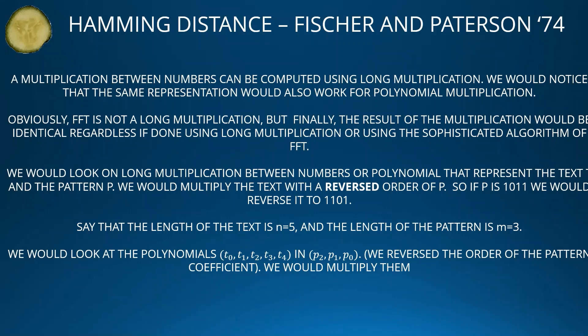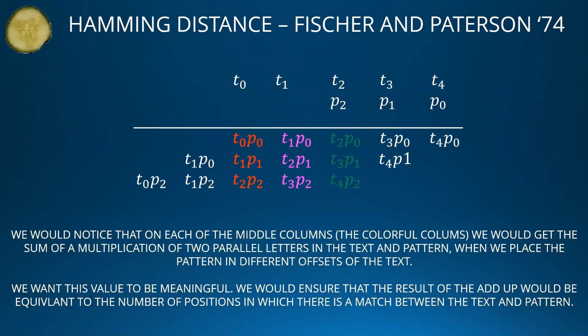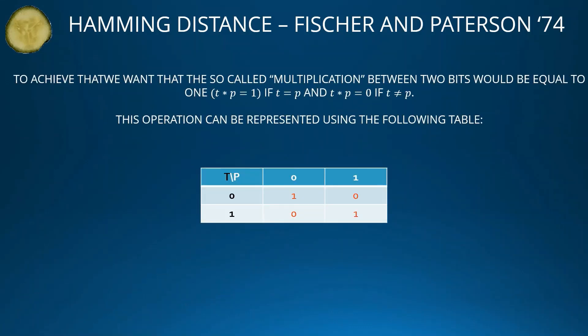As you can see, on each of the middle (colorful) columns we get the sum of products of corresponding letters in the text and pattern when the pattern is placed at a different offset in the text. We want this value to be meaningful: the sum should equal the number of positions where there is a match between the text and the pattern. To achieve that, we want the multiplication of two bits to equal 1 if T = P, and 0 if T ≠ P.